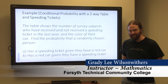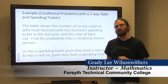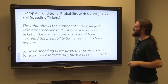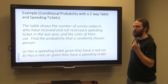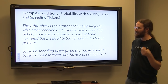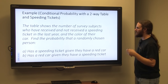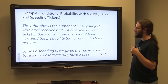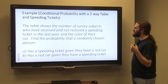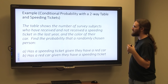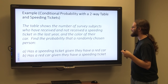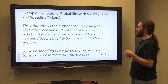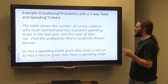Today we're going to discuss some probability, and we're going to talk about conditional probability using a two-way table. The table shows the number of survey subjects who have received and not received a speeding ticket in the last year and the color of their car.